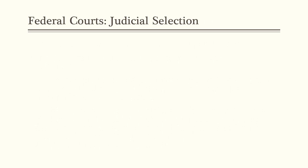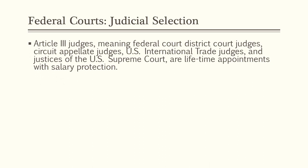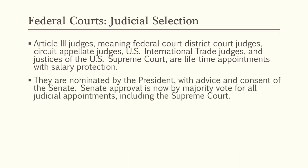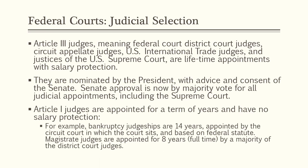Now let's talk about judicial selection in federal court. Article III judges — meaning federal district court judges, circuit appellate judges, U.S. international trade judges, and justices of the Supreme Court — are lifetime appointments with salary protection, nominated by the President with advice and consent of the Senate. Senate approval is now by majority vote for all judicial appointments, including the Supreme Court, meaning a judicial nominee only needs 51 votes to be approved. Article I judges are appointed for a term of years with no salary protection — for example, bankruptcy judgeships are 14 years. Magistrate judges are appointed for eight years full-time by a majority of the district court judges.